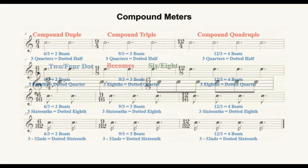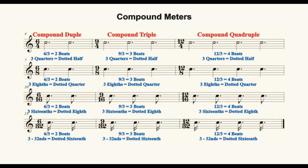Thus, taking a few examples from the illustration, in 6/4, 6 divided by 3 equals 2 beats and 3 quarter notes combined to a dotted half note. In 9/8, 9 divided by 3 equals 3 beats and 3 eighth notes combined to a dotted quarter note.